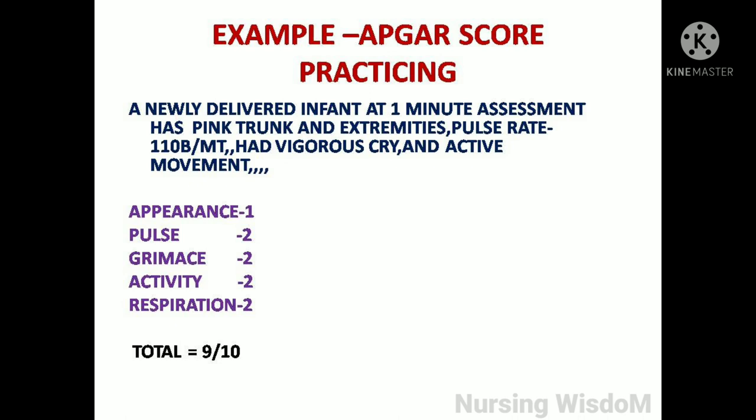Let me practice APGAR scoring. First example: a newly delivered infant at 1-minute assessment has pink trunk and extremities, a pulse rate of 110 beats per minute, a vigorous cry, and active movement. For appearance — pink trunk and extremities — we will not assign a score of 2 at 1 minute because newborns typically have transient cyanosis around the mouth and extremities.